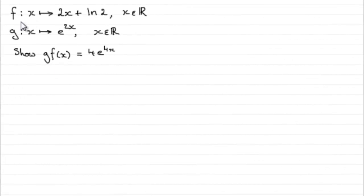Okay, well in this first part we're given these two functions f and g. f is a function such that x maps onto 2x plus natural log of 2, and x is any real number. Similarly, g is a function such that x maps onto e to the power 2x, where x is any real number.